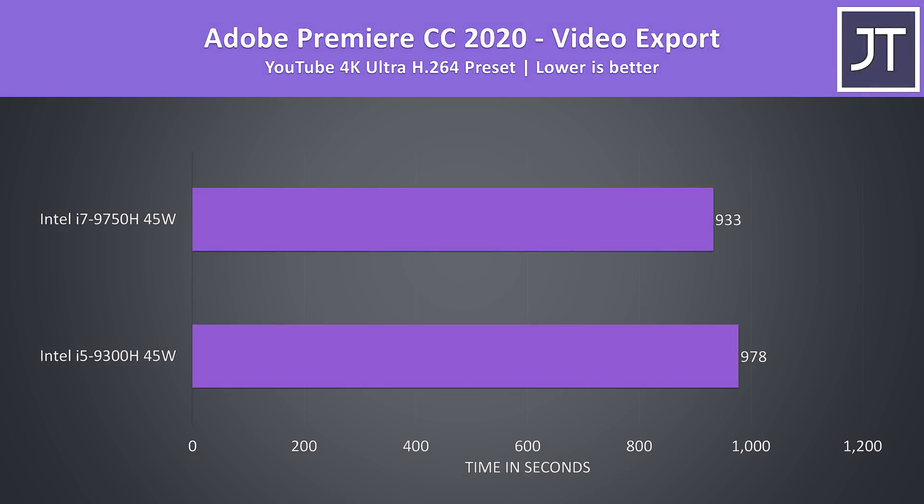I've used Adobe Premiere to export the same 4K laptop review video, and the results surprised me. Given this task is generally pretty CPU heavy, I figured the difference would be larger, however that was not the case in this particular project. My guess is both are utilizing QuickSync primarily in this workload, so the iGPU may be the limit rather than core count.